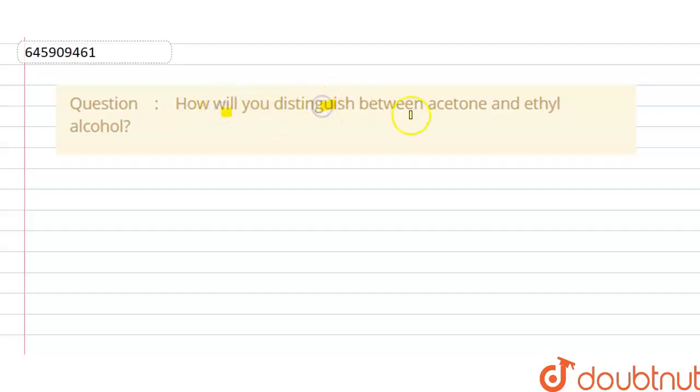The solution of this question is we know that acetone will give yellow colored derivative, this is derivative here, yellow colored derivative with 2,4-dinitrophenylhydrazine.